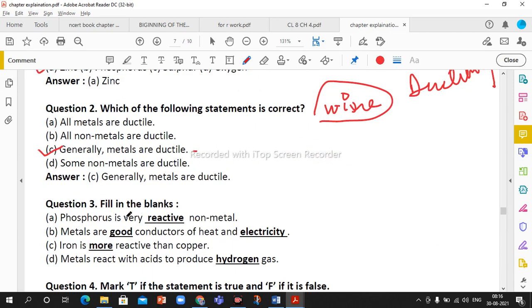Fill in the blanks: Phosphorus is very reactive non-metal. Phosphorus is two types: red phosphorus or white phosphorus. It is a non-metal which is very reactive. When kept in open it can react with atmospheric oxygen and form phosphorus oxide. So the non-metal which is very reactive is phosphorus.